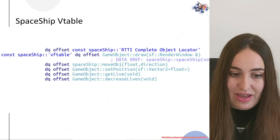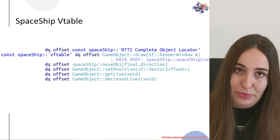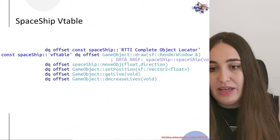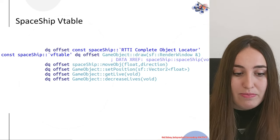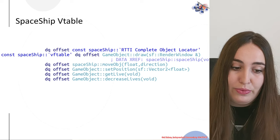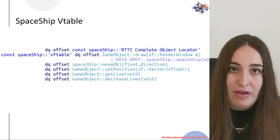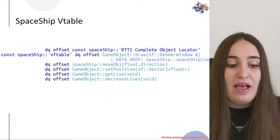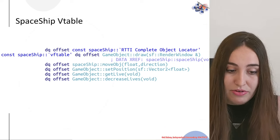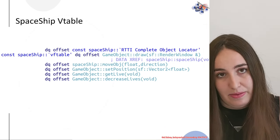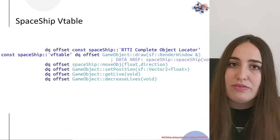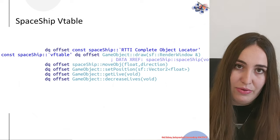After understanding the object structure using the constructor, we can also examine its vtable. We can see the vtable of spaceship here, and before diving into the functions themselves, we can see at the beginning there is an RTTI complete object locator. RTTI is runtime type information — it exposes object data types at runtime. This is very common in C++ vtables, and any operation on an object requires a pointer or reference to the suitable type. RTTI is also used for dynamic casting, but that will not be covered in this class.